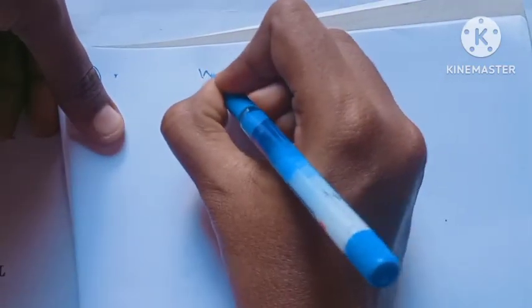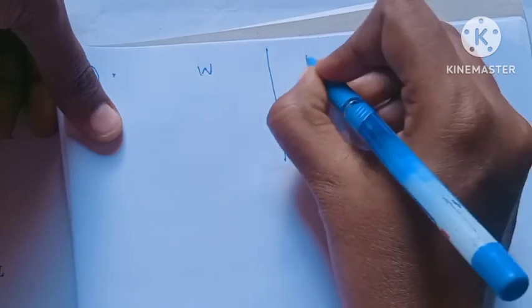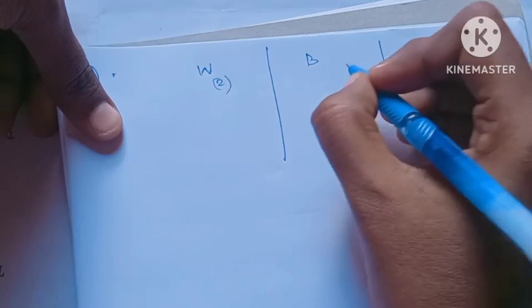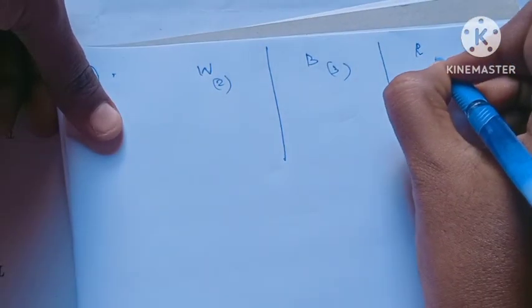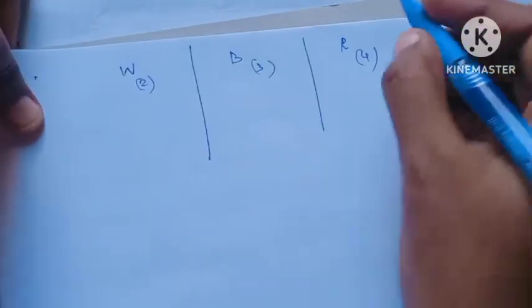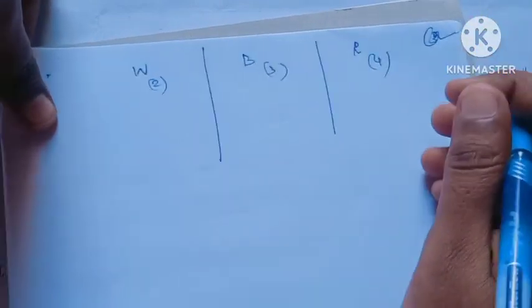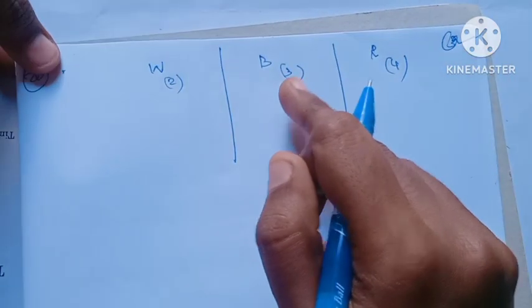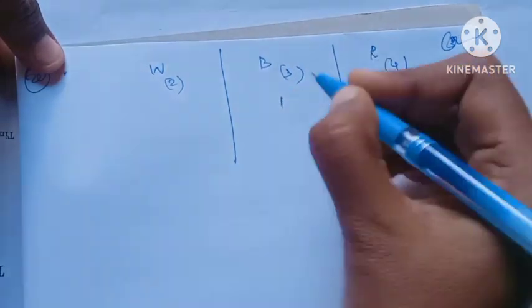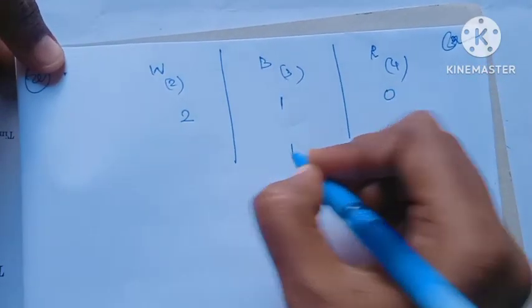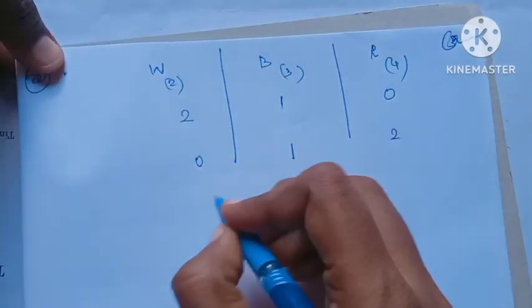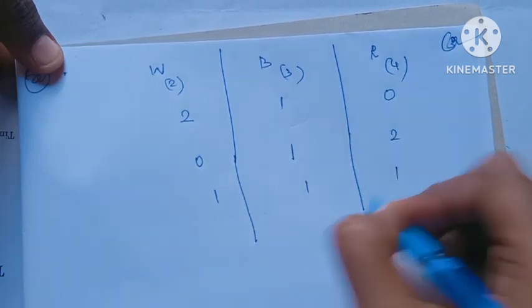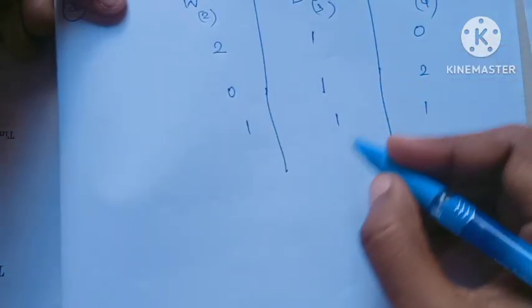Let's see. So, what are the different cases? White, black, red — 2 white, 3 black, 4 red. We are going to select 3, and at least 1 of the 3 selected must be black. We consider cases: 1 black, 2 black, and 3 black balls selected.